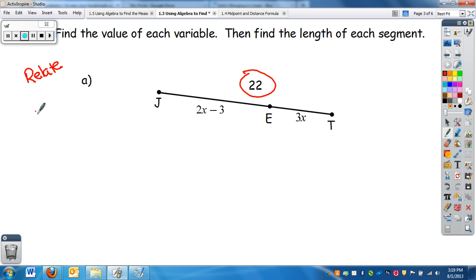Well, JE, you could think of, plus the length of ET equals the bigger segment JT. I can replace these with what they actually equal. We know JE is 2X minus 3, ET is 3X, and JT is the length of 22.